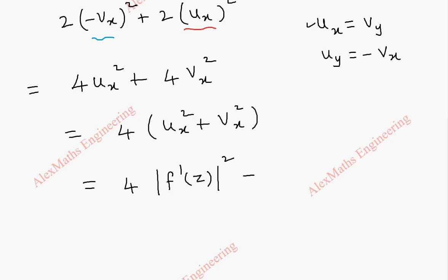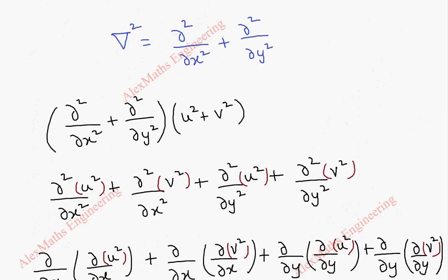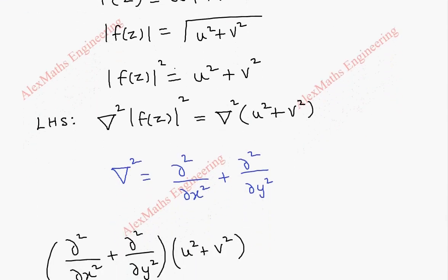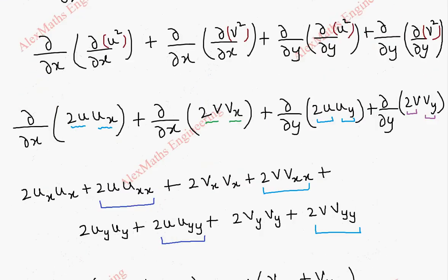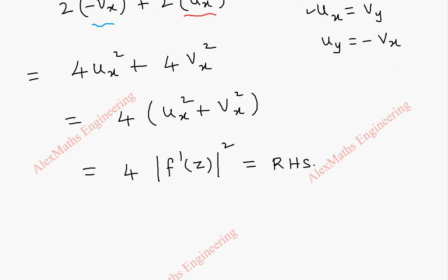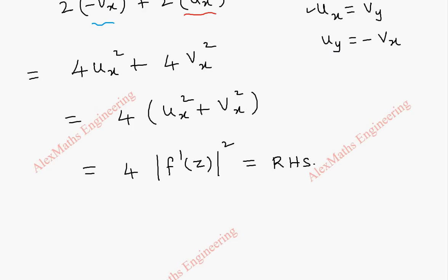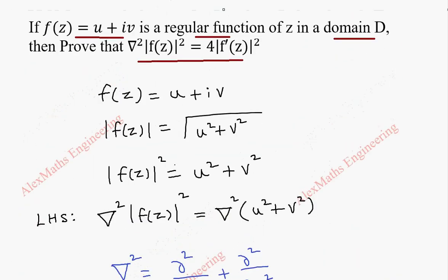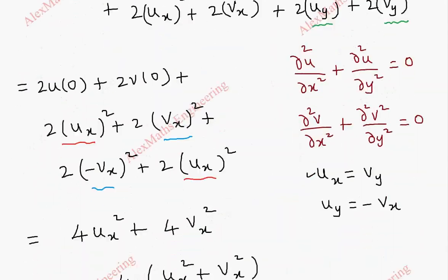This gives the right-hand side. Finally, we got the proof. We took the LHS which is ∇²|f(z)|² and continued step by step to arrive at 4|f′(z)|², which is the right-hand side of the given equation. Thank you very much.